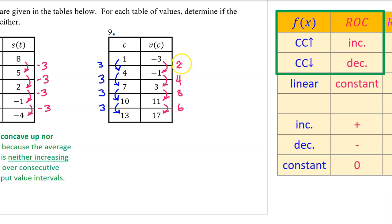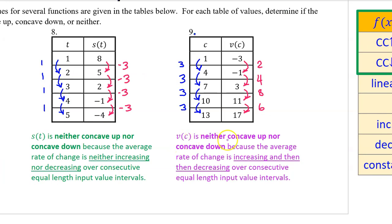For number 9, here are the changes in the input values and here are the changes in the output values. Notice that we once again have consecutive equal-length input value intervals, so we don't need to actually calculate the average rate of change to see that it is increasing over some intervals but then decreasing over others. V(c) is neither concave up nor concave down because the average rate of change is increasing and then decreasing over consecutive equal-length input value intervals.